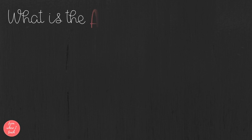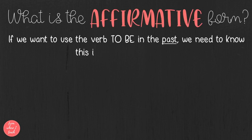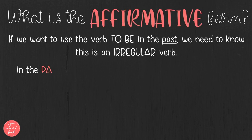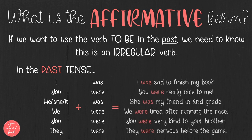Let's focus on the verb to be in the past. In the affirmative form, we need to be aware that it is an irregular verb. In the past tense, the subject will go with was or were. I and he will go with was, and you, we, and they will go with were. For example: I was sad to finish my book, or you were really nice.